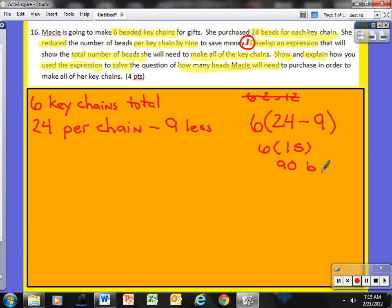Now, some of you did this and I thought it was pretty clever. You said this. You said 6 times 24 and then you subtracted that from, if she were to make it from 6 with just 9 beads per. So, 6 times 24 gives me 144. And then you subtract that because that would be 144 beads if she made 6 keychains with 24 beads each. You subtracted that from 6 times 9 which gives you 54. I subtract that. That gives me 90. And that also gives me 90 beads. That was another way to go about it.